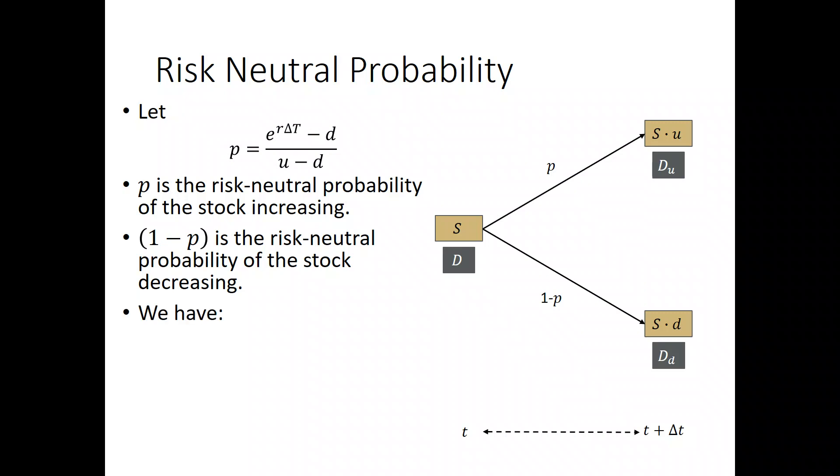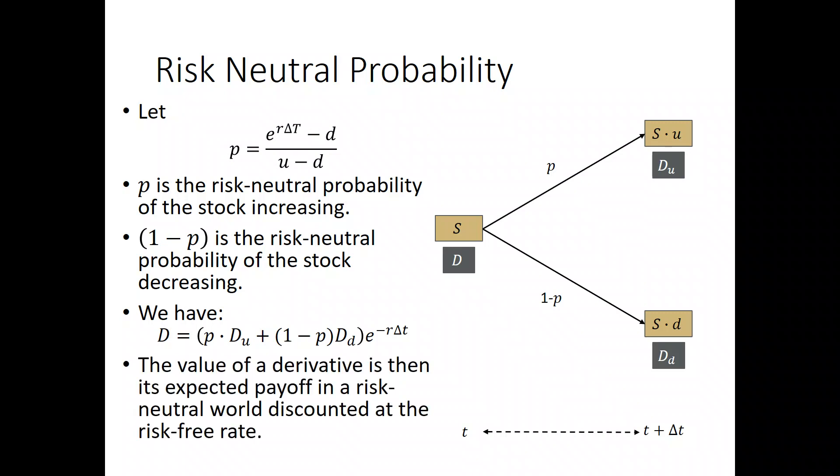We have the following result: D, the value of the derivative at time T, is equal to P times D sub U plus 1 minus P times D sub D, all multiplied by e to the minus R delta T. We can recognize this as looking like an expectation using these probabilities. We say the value of the derivative is the expected payoff in a risk-neutral world, discounted at the risk-free rate. These formulas — the formula for P and the formula for D — depend on being able to create this riskless portfolio, which is created by computing the value of delta.